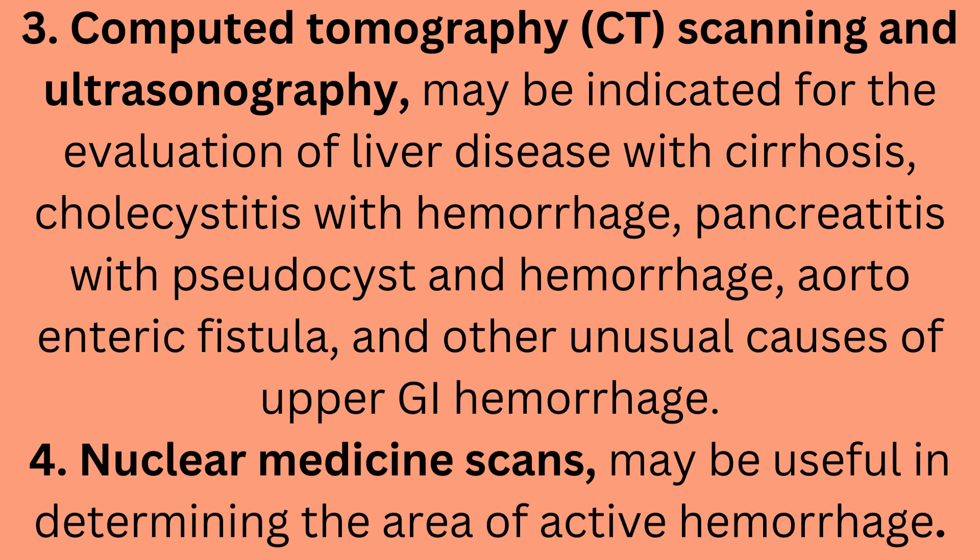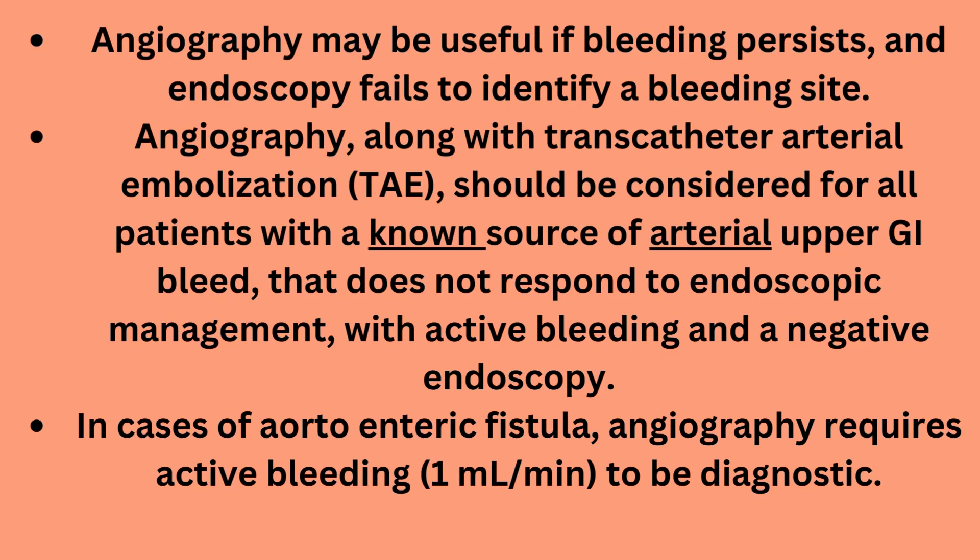Number three: CT scanning and ultrasonography may be indicated for the evaluation of liver disease with cirrhosis, cholecystitis with hemorrhage, pancreatitis with pseudocyst hemorrhage, aortoenteric fistula, and other unusual causes of upper GI hemorrhage. Number four: nuclear medicine scans may be useful in determining the area of active hemorrhage. Angiography may be useful if bleeding persists and endoscopy fails to identify a bleeding site.